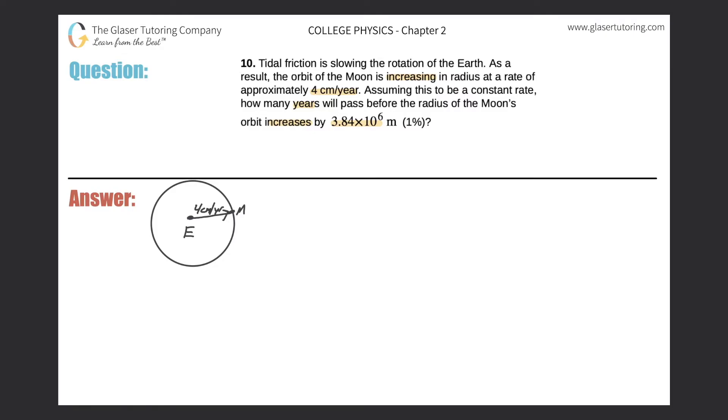And now it says, assuming this to be a constant rate, how many years - so we're looking for time - will pass before the radius of the Moon's orbit increases by 3.84 times 10 to the 6 meters. So it sounds like this value here is a distance or displacement value. It doesn't matter in this problem which you choose because they're both going to be the same. So I'm just going to call it a displacement.